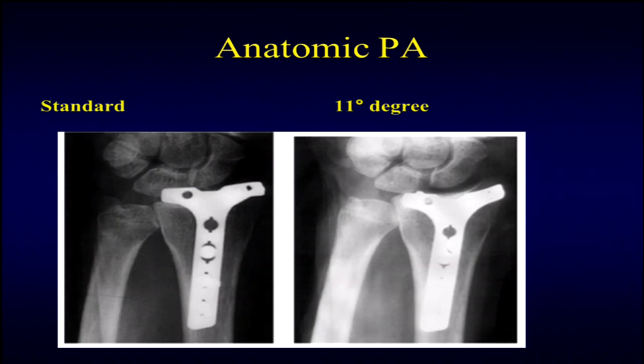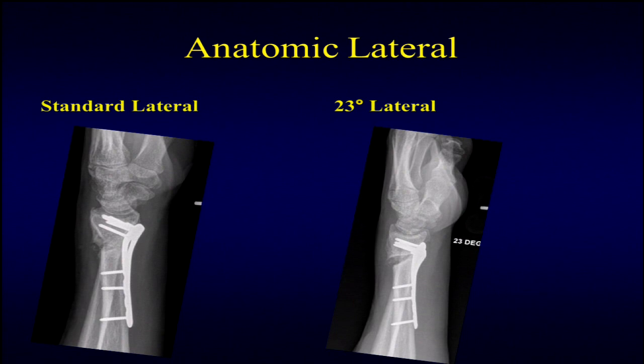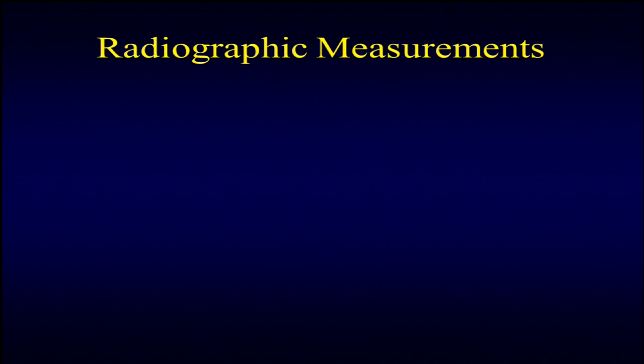On the left side you see a standard film from Gelberman's article showing a dorsal plate that looks distal and almost in the joint on the standard view, whereas once you shoot down the joint at 11 degrees you can see nicely down the joint. With your standard lateral it's hard to see whether screws are penetrating. This is a patient I did a distal radius osteotomy on—having that tilt shows the curvature very nicely to ensure there's no penetration.